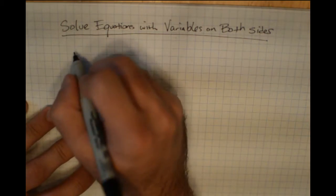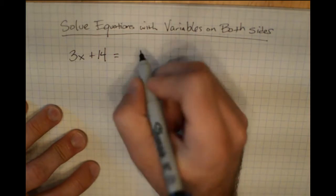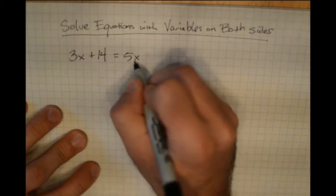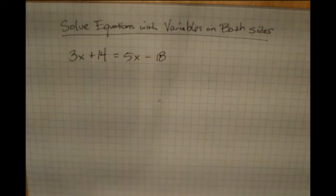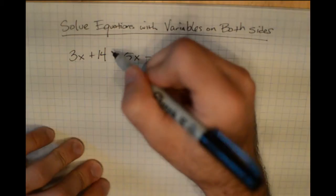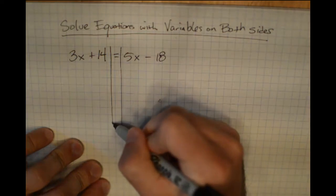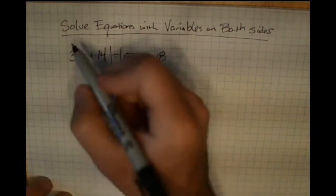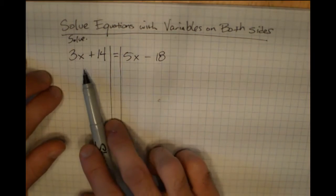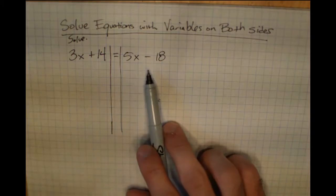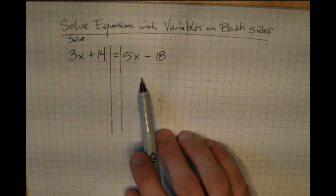Let's take a look at an example: 3x plus 14 is equal to 5x minus 18. Our whole goal here is to get x on one side and get a number on the other side — just a variable on one side and just a number on the other.